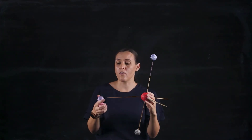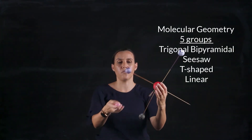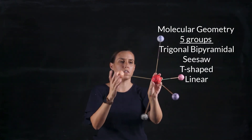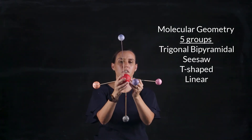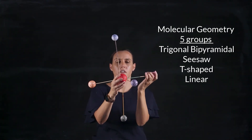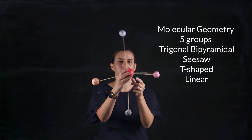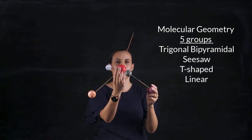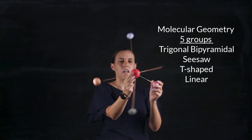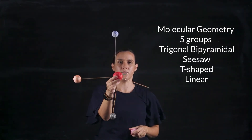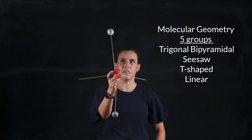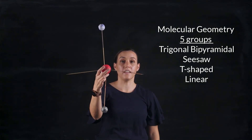So remember with five groups around it, lone pairs go into the central positions. We've got the trigonal bipyramidal with five bonding, then seesaw with four bonding, then T-shape with three bonding, and lastly three lone pairs and two bonding gives our linear shape.